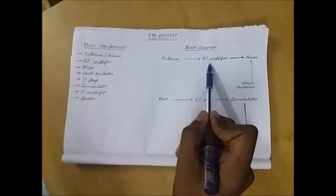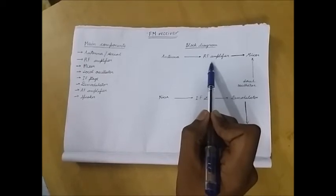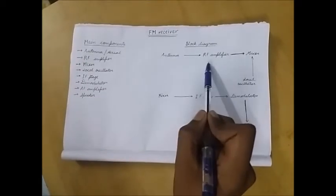Then the RF amplifier. RF amplifier receives the low intensity electrical signals from the antenna and amplifies it.